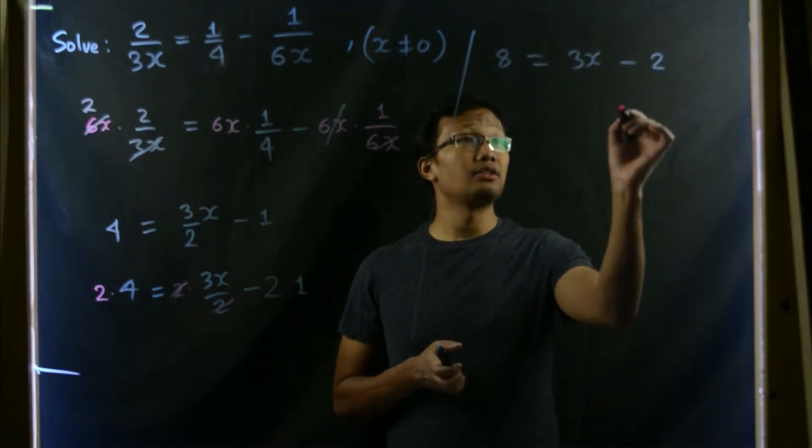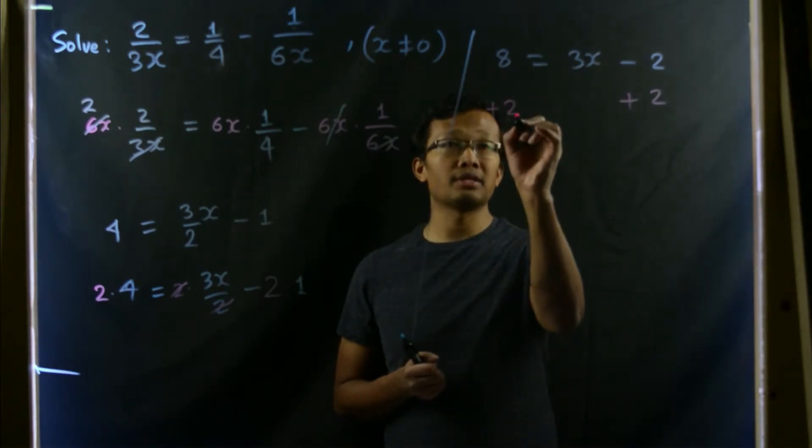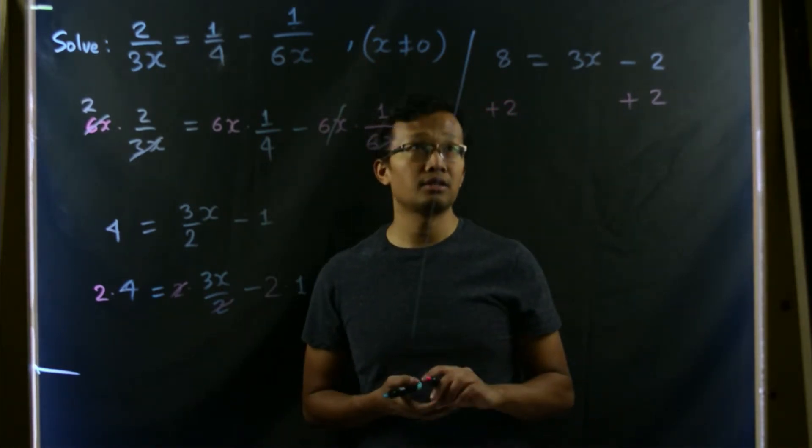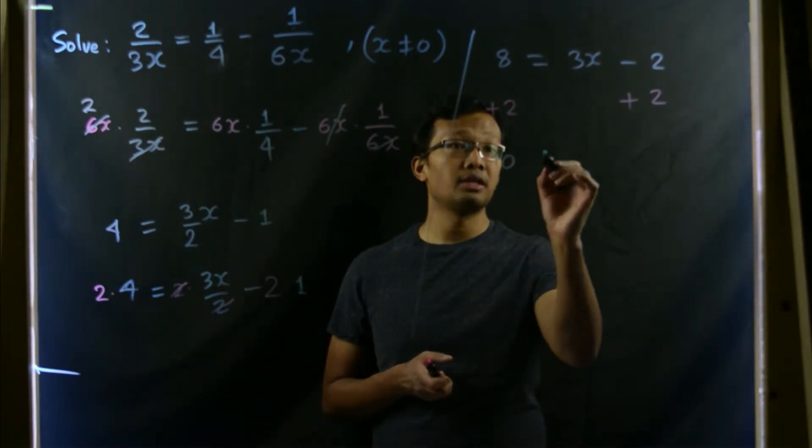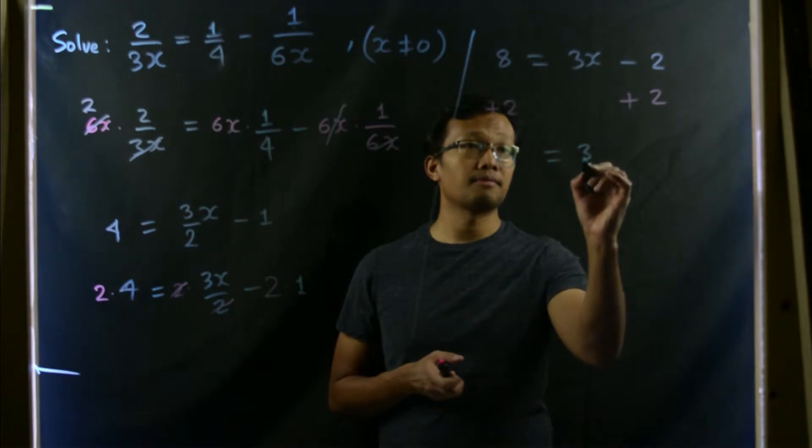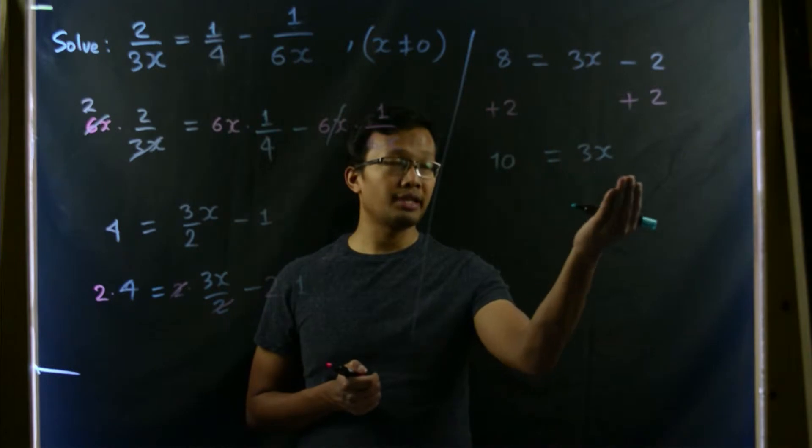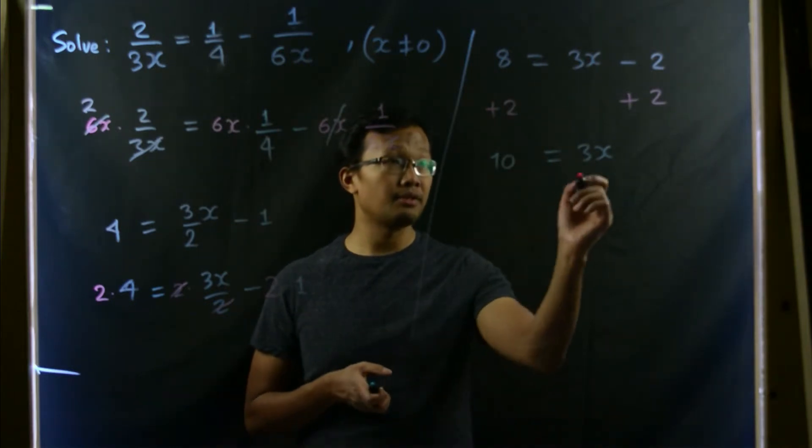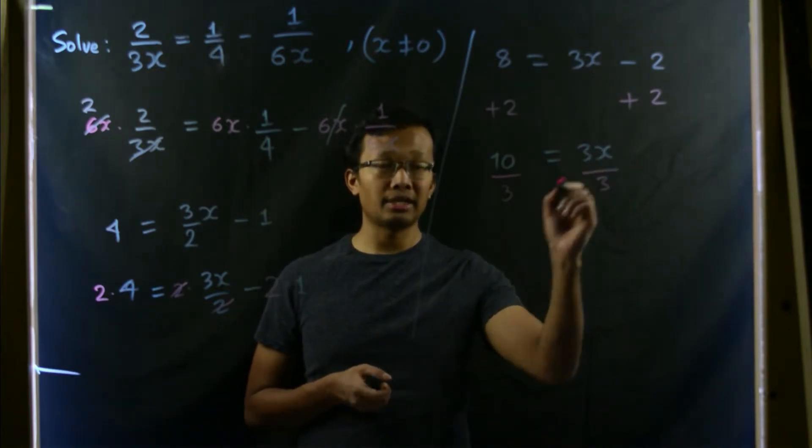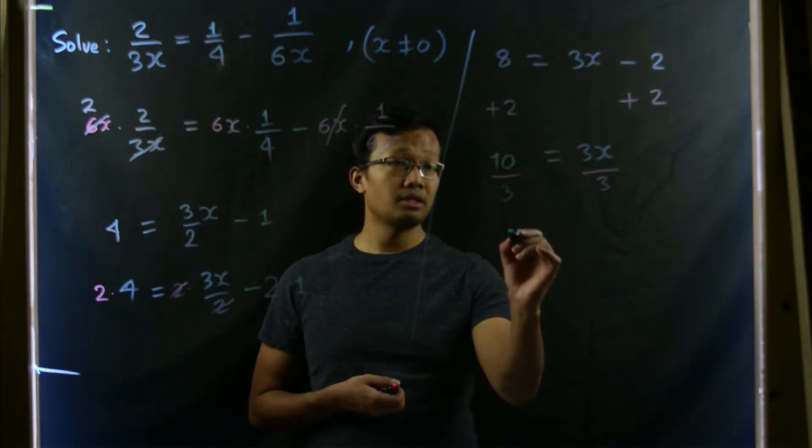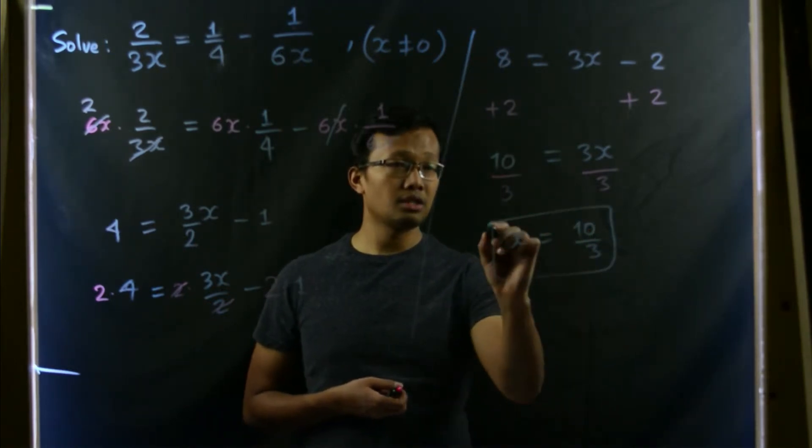Let us add 2 on both sides since we want to make this 3x alone on the right hand side. So here in the left hand side it becomes 10, 8 plus 2 is 10 equals 3x. Now let's divide both sides by 3 such that we will have only x in the right hand side. So that becomes x equals to 10/3. So this is the solution.